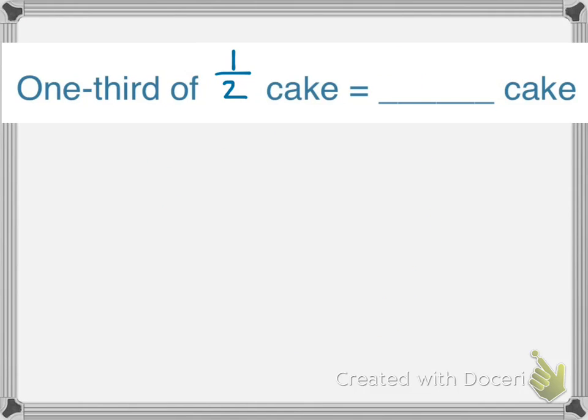Let's try another one. One third of a half a cake equals how much cake? Again, we're going to turn one third of a half a cake into an expression. One third is going to become the fraction one third, of will be our multiplication sign, and half of our cake.